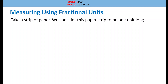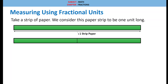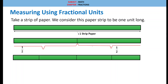Take a strip of paper. We consider this paper strip to be one unit long — one whole unit. Next, we are dividing this one into two equal parts. Each one will become one half, represented as 1 divided by 2. The second half is also 1 divided by 2.